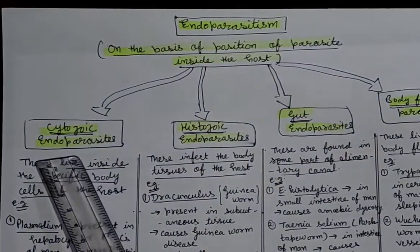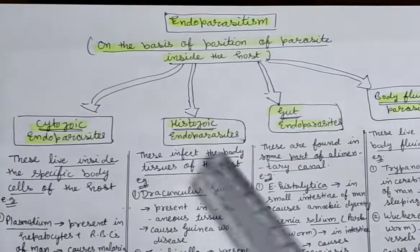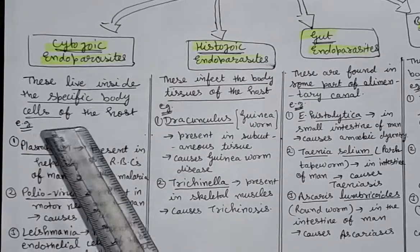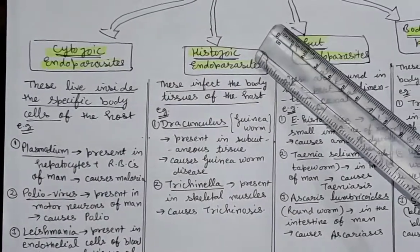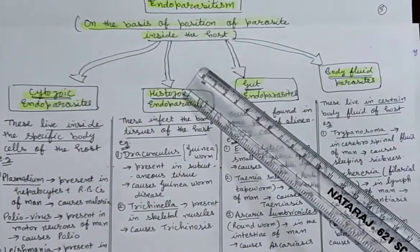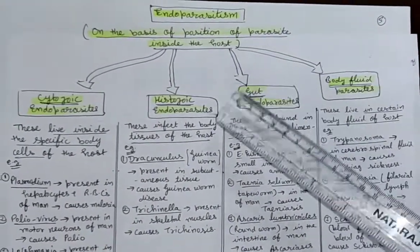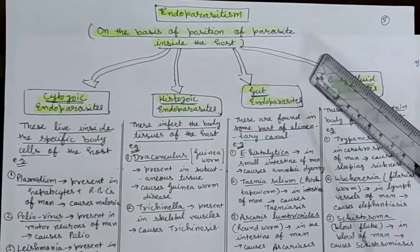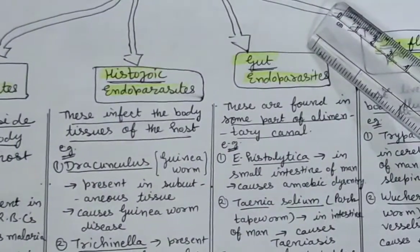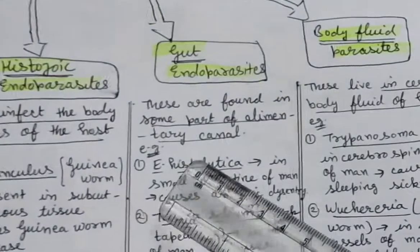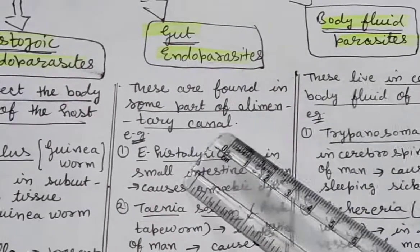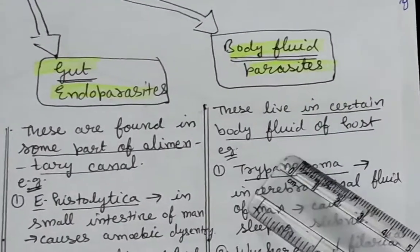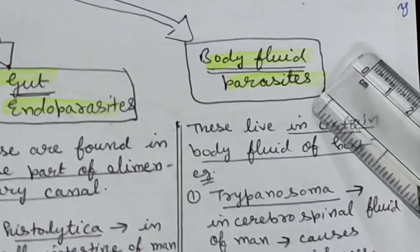The first type is cytozoic endoparasites — the parasite lives inside specific body cells of the host. The second type is histozoic endoparasites — 'histo' means body tissues, so these are parasites that infect the body tissues of the host. Third are gut endoparasites — 'gut' relates to the alimentary canal, so parasites found in parts of the alimentary canal are gut parasites. Fourth are body fluid parasites — parasites that live in the body fluid of the host.